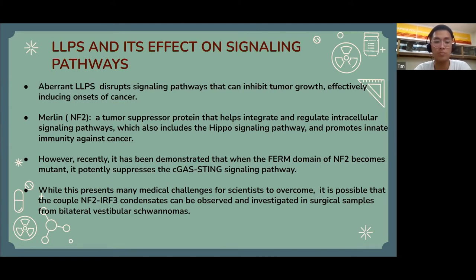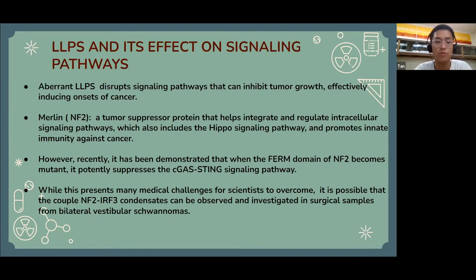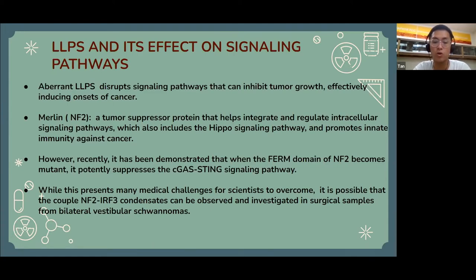That is the current problem. However, it's possible to observe this clinically in laboratory experimentation, and it can also be investigated especially when taking samples from biopsy — particularly biopsy from vestibular schwannoma. Vestibular schwannoma is a slow-growing, cat-like benign tumor found in the nerve fibers next to the ear. Because of that, we can attempt to target this particular mutation and solve the problem.